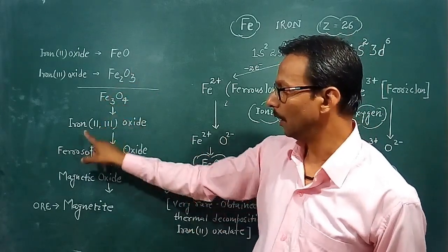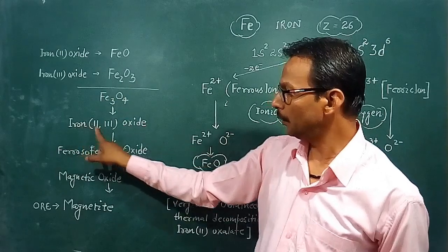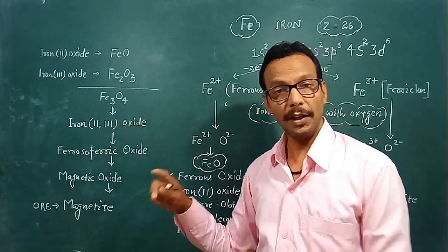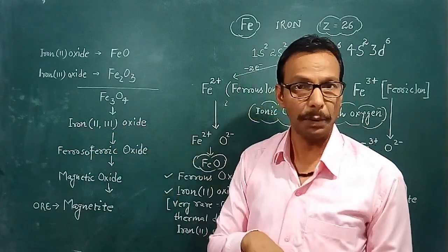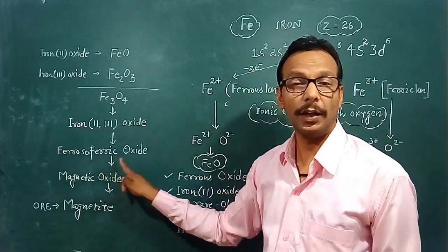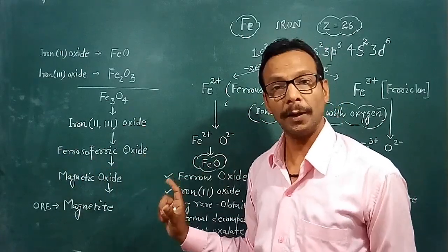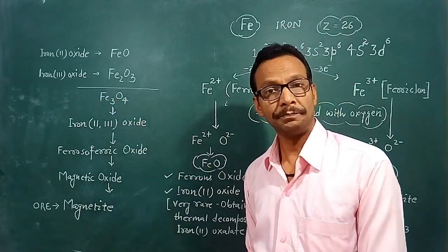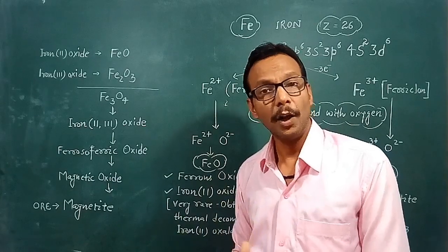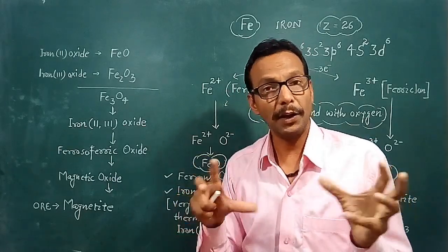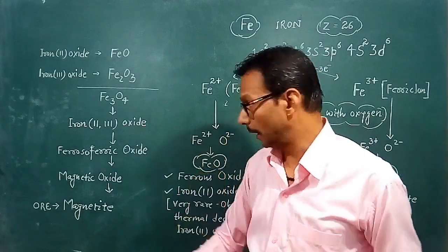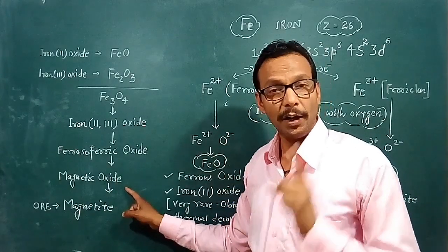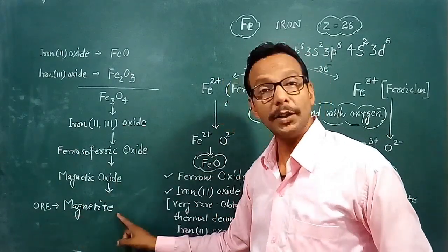Fe3O4 contains both iron(II) and iron(III), so it is called iron(II,III) oxide, meaning it has both ferrous and ferric character. Its name is ferrous ferric oxide. This oxide is found in the earth's crust and exhibits strong magnetic properties, which is why it is known as magnetite.